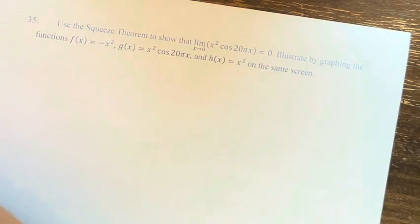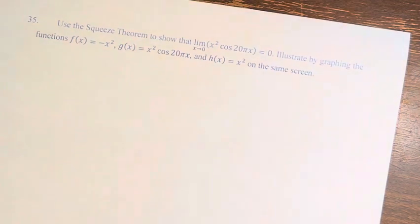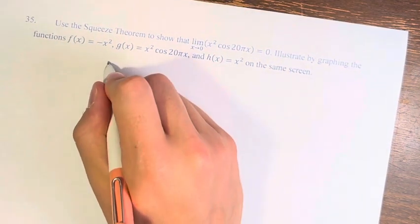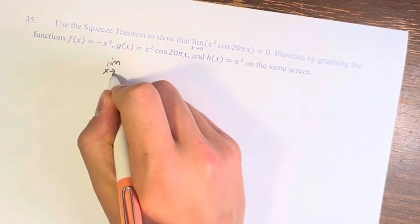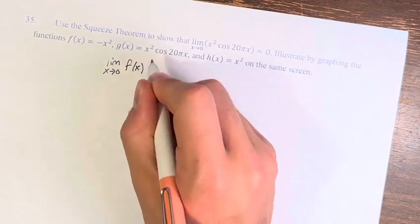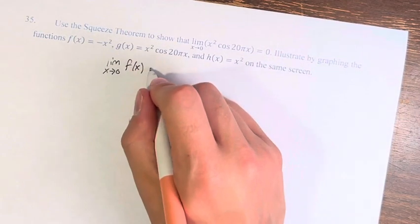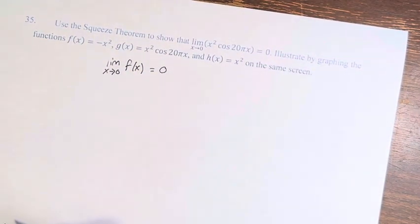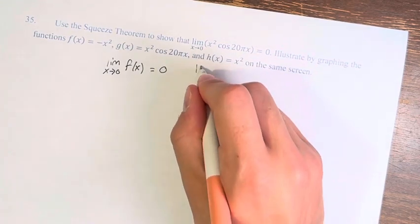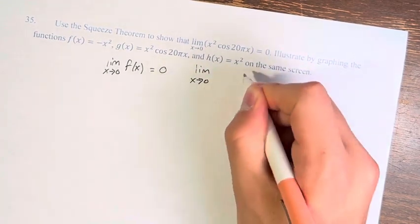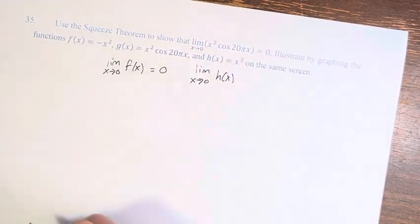So therefore, we can say that the limit as x approaches 0 of f(x), negative x squared, is equal to 0. And the limit as x approaches 0 of h(x), x squared, is also equal to 0.